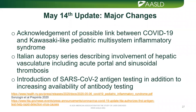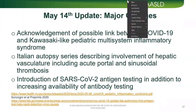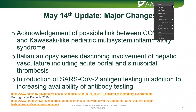Major changes since the last update on May 4th include acknowledgement of the possible link between COVID-19 and Kawasaki-like pediatric multisystem inflammatory syndrome, which is relevant for re-entry for pediatric colleagues. An Italian autopsy series was published describing involvement of hepatic vasculature, including acute portal and sinusoidal thrombosis — relevant given reports of thromboembolic events associated with COVID-19. We also introduced SARS-CoV-2 antigen testing in addition to the increasingly available antibody testing.